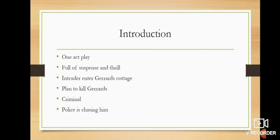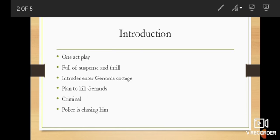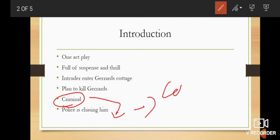This is the introduction to the chapter. Douglas James has written this as a one-act play which is full of suspense and thrill. An intruder enters Gerrard's cottage with a plan to kill Gerrard. This shows that he was a criminal and the police were chasing him because he had committed a murder.